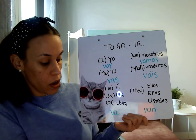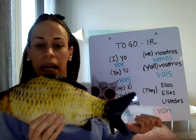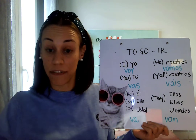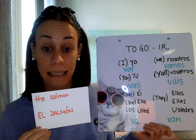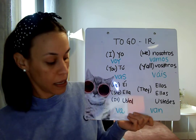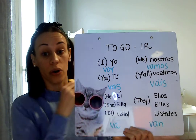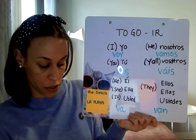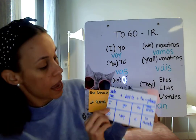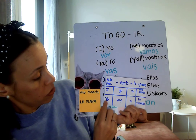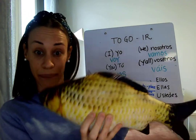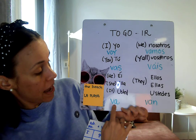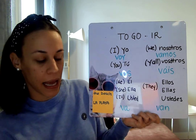Next, we will learn about what this fish will do. I think he is a salmon, el salmón. I think that the salmon will go to la playa, to the beach. So we look again — we won't say yo because it's him, it's he. So we will say él. Él va a la playa. Él va a la playa.